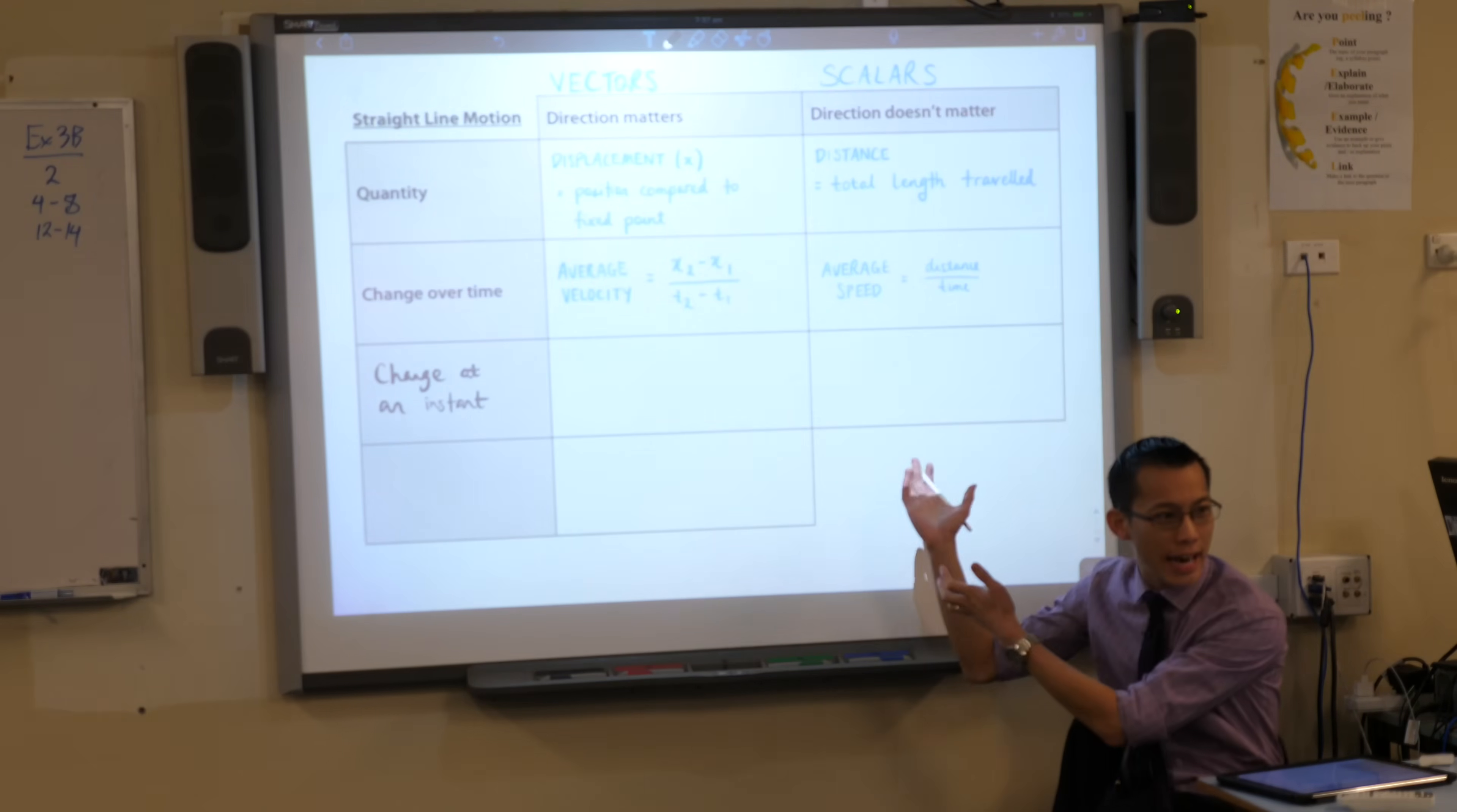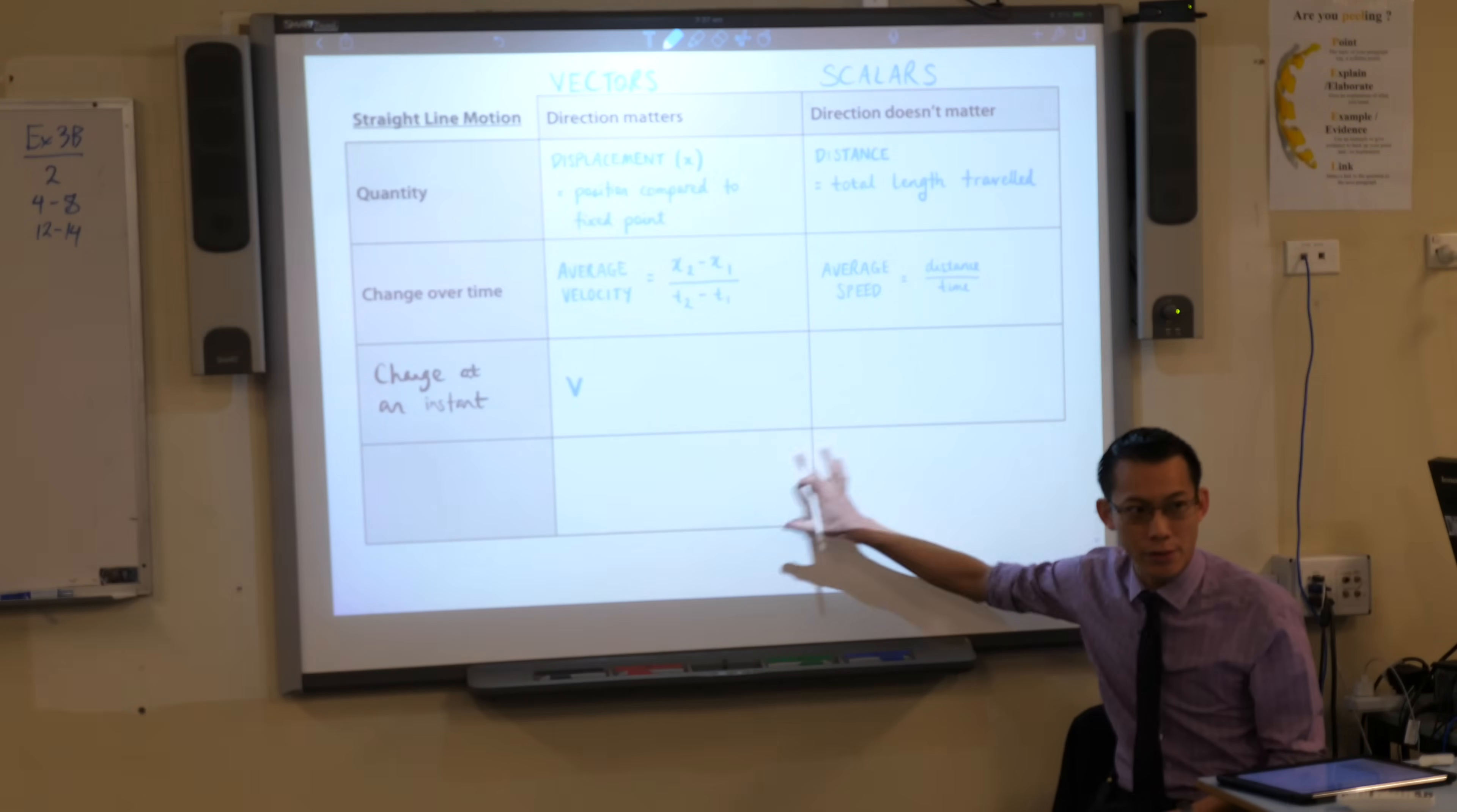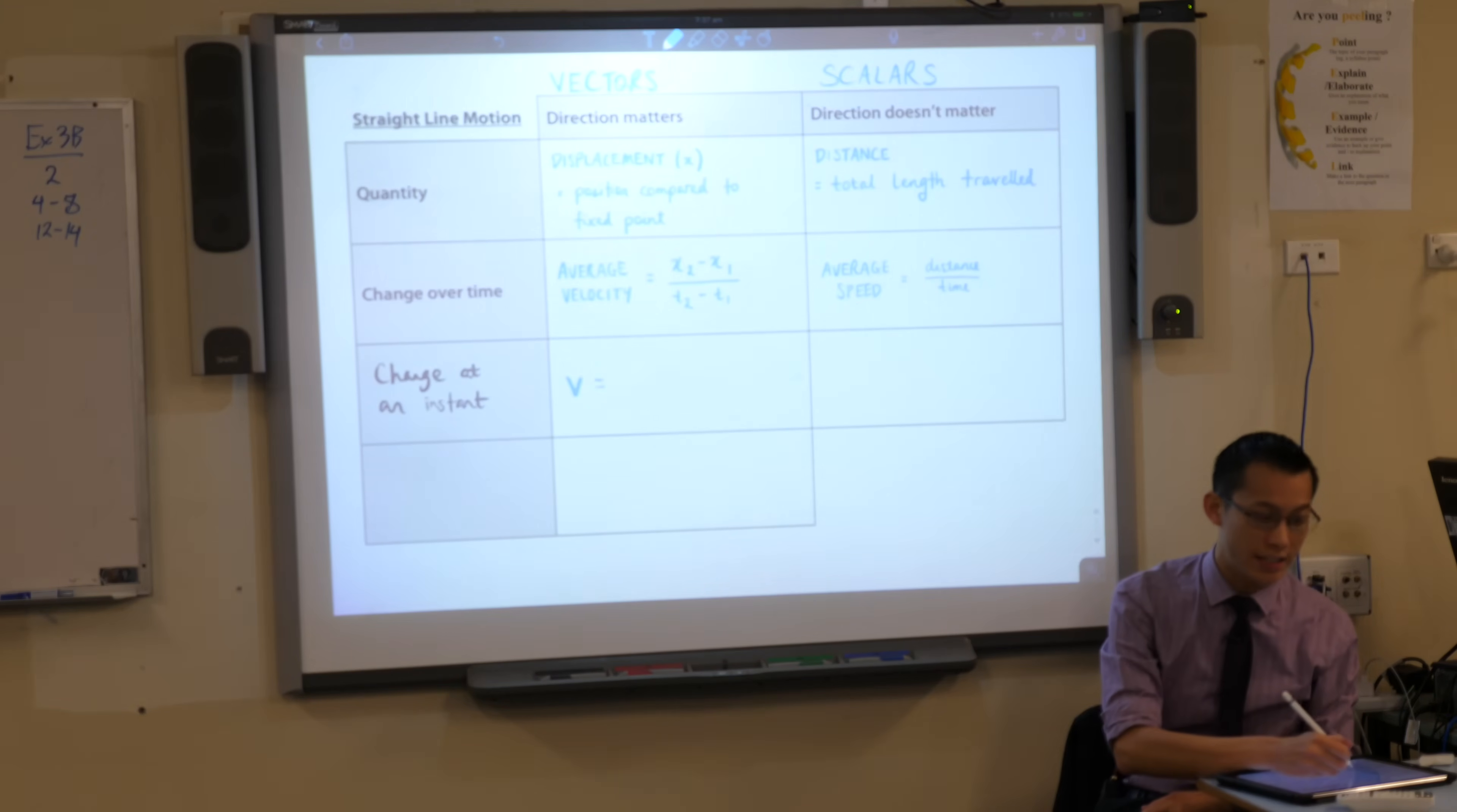So how do we work out the change at an instant? If we call that V for velocity, all we're comparing is on the left hand column, displacement, how it changes in comparison to time. We want the derivative that relates those two. So if I'm comparing displacement, I would say dx, and when I compare that with how time is changing, I would say dt.